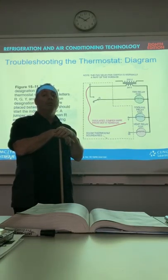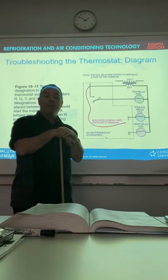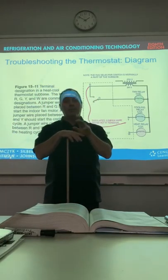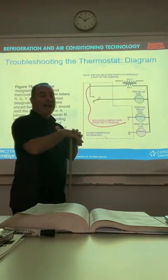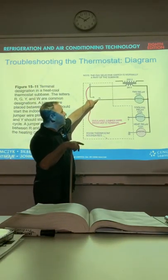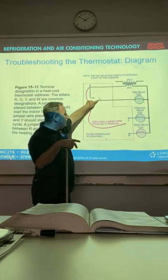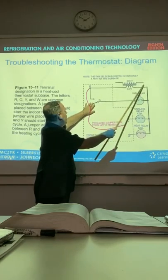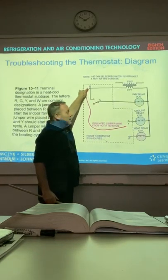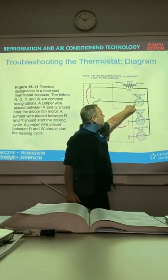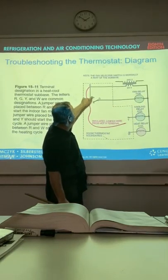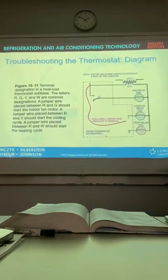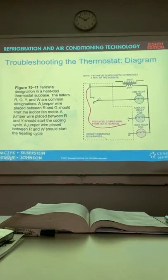I can take a jumper wire and connect it between R and G to see if that's going to come on. And I should listen for it to come on. I can take it and jump it out to Y and listen for Y to come on. Now, let's say I hook it to R to G and I don't hear a blower on. Well, I know I'm sending power to it, so now I'm going to go to where the indoor unit is and find out why it's not turned on. And right there at the thermostat wires to the unit, I should have power between R and common and G and common.